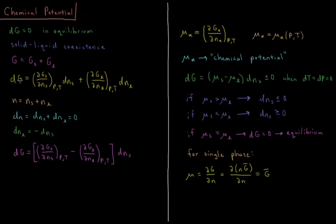The change in Gibbs energy as we change the number of particles in the solid and liquid phases is the partial derivative of the Gibbs energy of the solid with respect to the number of solid particles at constant pressure and temperature, times the change in the number of solid moles, plus the partial derivative of the Gibbs energy of the liquid with respect to the number of moles of liquid at constant pressure and temperature, times the change in the number of moles of liquid.